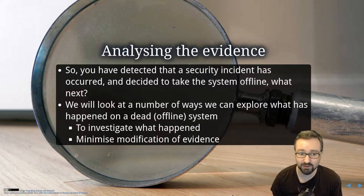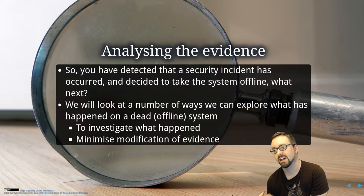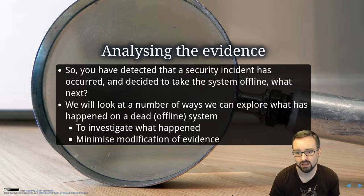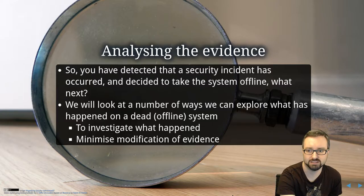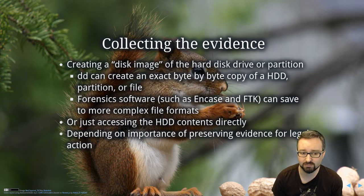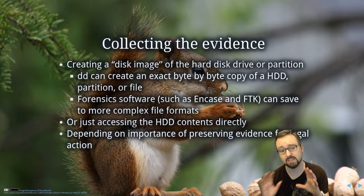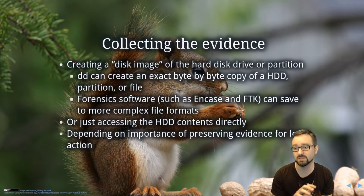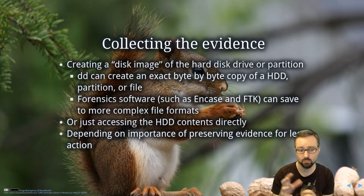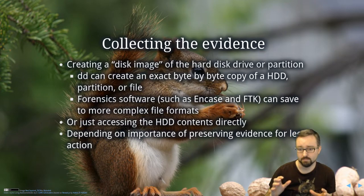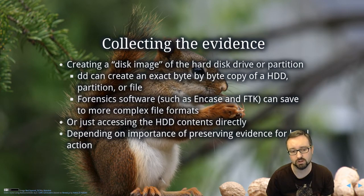So we've detected a security incident and taken the system offline — what do we do? We're going to talk about how you acquire and analyze that evidence while minimizing the potential to compromise it. The first thing is to acquire the evidence by either creating a disk image or pulling the hard drive out and plugging it into a computer. You can take what's on a hard drive and create an image using a system utility like DD to copy byte for byte what's on the disk and store it in a file or on another disk.